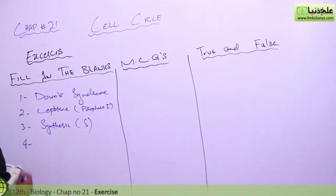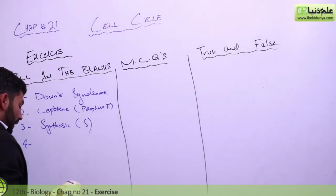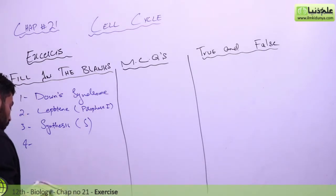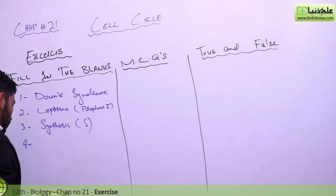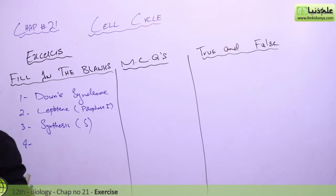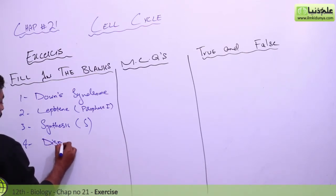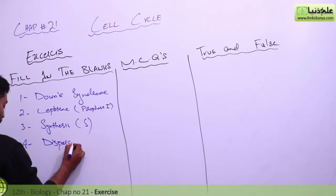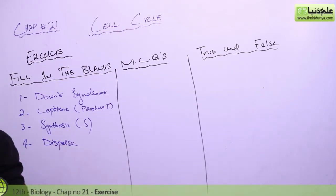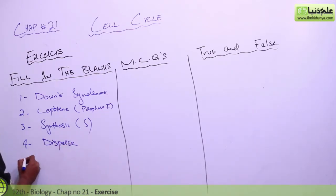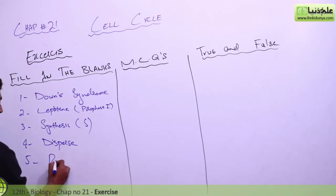Fourth question: polar microtubules — what do they do during anaphase? They disperse during anaphase. Fifth question: mitotic apparatus is formed during which phase? Mitotic apparatus forms during prophase.